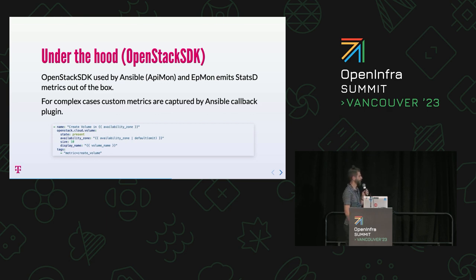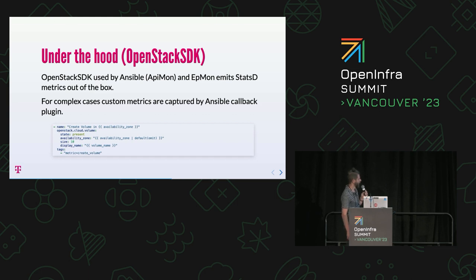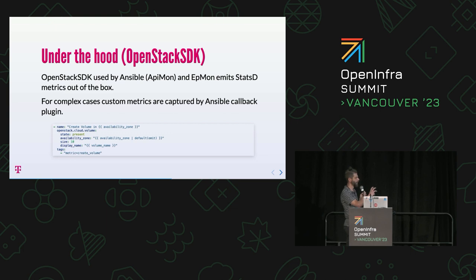Since some things in OpenStack are asynchronous, we need to track how much time it takes to provision a server until we are able to log into it, or once we start creating a volume, how much time until the volume becomes available. At the very bottom you see tags - this is more or less a hack to Ansible; we haven't found any better way. But this way you can also combine multiple Ansible invocations into a single metric, so apart from the regular raw API metrics, there would be additional metrics combining multiple Ansible steps.